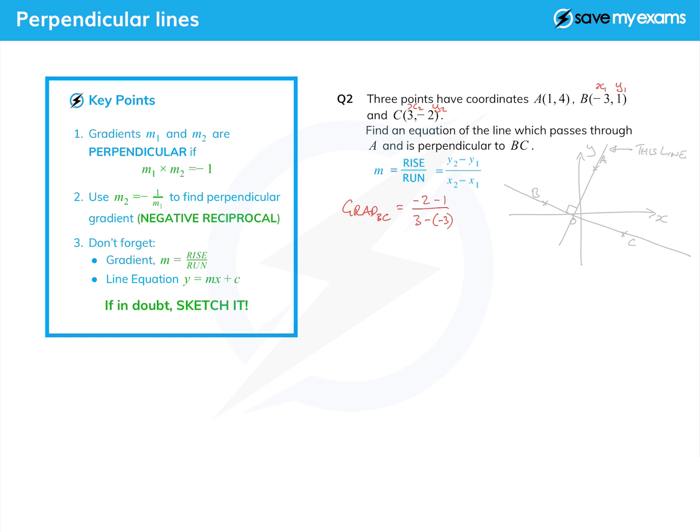That is minus 3 on the top and 3 take away negative 3 is 3 plus 3 which is 6. So the gradient of BC is minus a half.